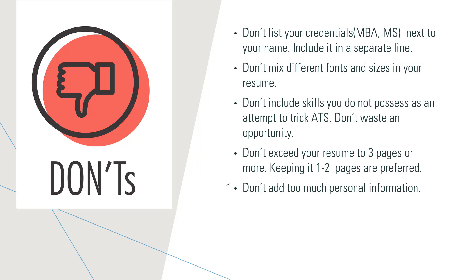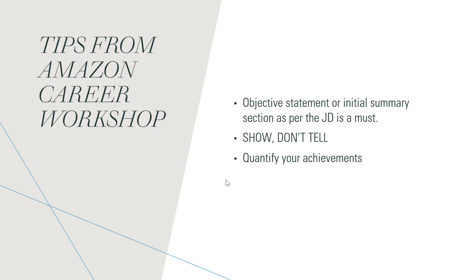From an Amazon career workshop, I learned to quantify your achievements. Instead of writing 'scheduled meetings,' write 'scheduled 100 meetings in the last month.' Adding a quantity shows your capacity and makes the accomplishment more concrete.